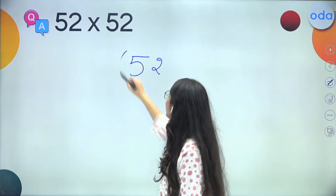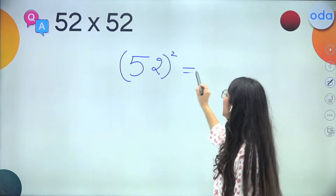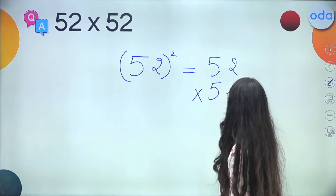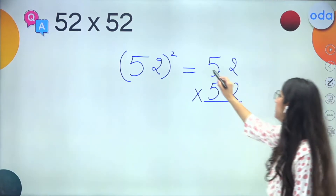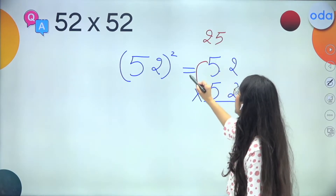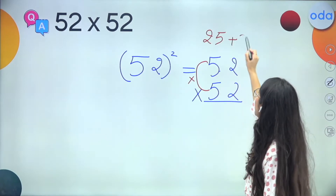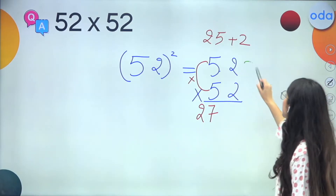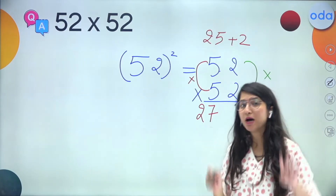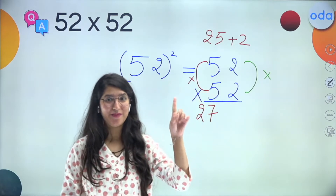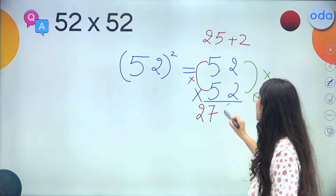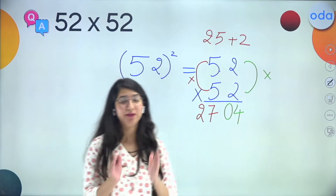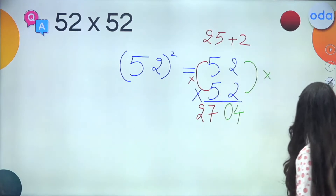For 52 squared: step one, 5 times 5 is 25, add ones digit 2, so 25 plus 2 equals 27. Step two: 2 times 2 is 4. Since it is a single digit, we write it as 04, because we want two digits in one grid as the number is closer to 100. So the answer is 2704.